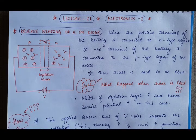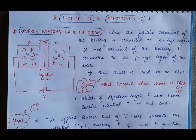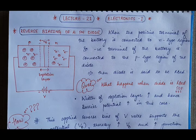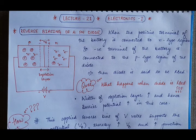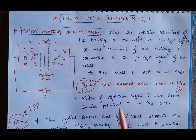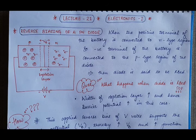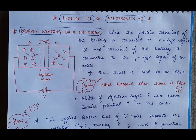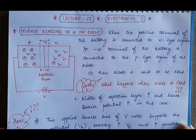The next question is: what happens when a PN diode is reverse biased? In forward biasing, the potential barrier decreases and the width of the depletion layer also decreases, so the resistance of the diode decreases. But in reverse biasing, the potential barrier increases, which increases the width of the depletion layer. The next question is: how does this potential barrier increase?